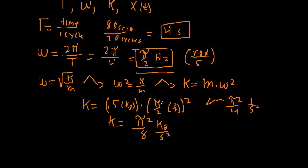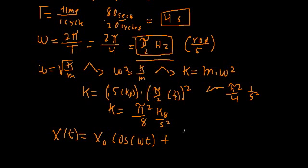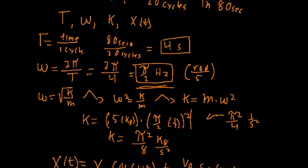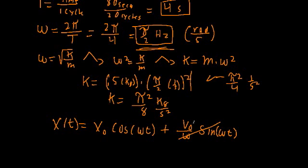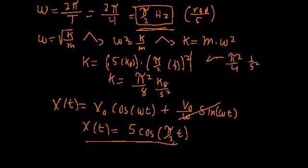Now let's find x(t). We know x(t) equals x₀ cosine(ωt) plus v₀ over ω times sine(ωt). From our initial conditions, x₀ is 5 and v₀ is 0, so the sine term disappears. We get x(t) equals 5 cosine(π/2 · t). And there we go — that wasn't too bad. I just wanted to give some basic examples, and we'll carry on in the next video.